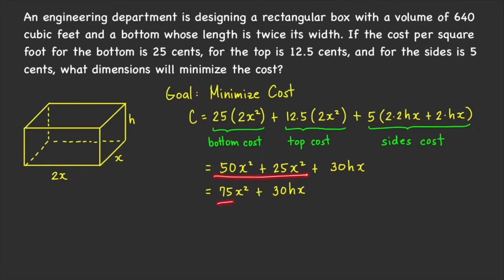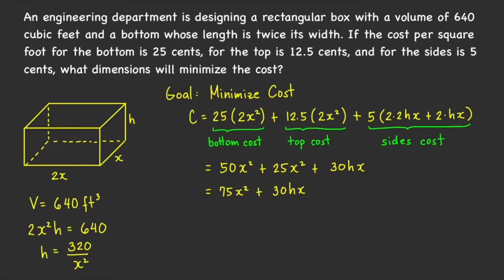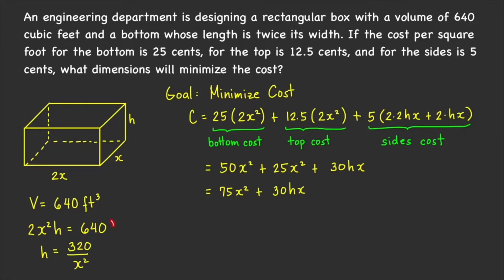Combining these, we get 75x² plus 30hx. Since we need to write our objective function as a function of a single variable, and we still have both h and x, we use the additional constraint that the volume must equal 640 cubic feet. The volume is 2x²h = 640, so we can solve for h in terms of x.